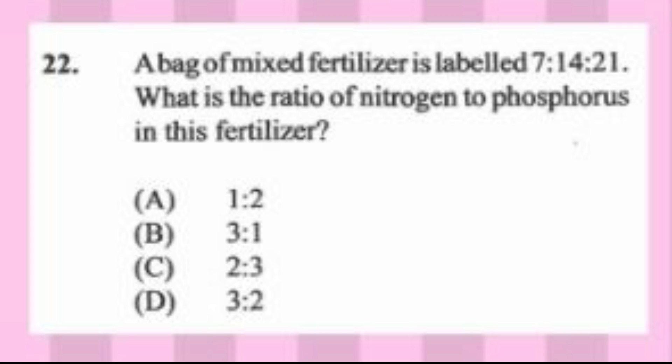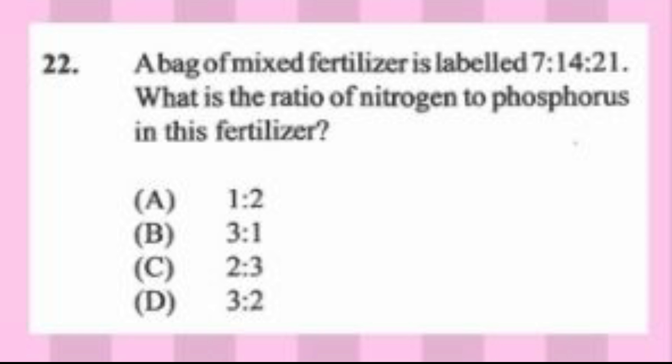Question number twenty-two: a bag of mixed fertilizer is labeled 7-14-21. What is the ratio of nitrogen to phosphorus? A) 1:2, B) 3:1, C) 2:3, D) 3:2. The answer is A, 1 to 2. You simplify the ratio using the lowest common factor of 7: 7÷7=1, 14÷7=2, 21÷7=3, giving a 1:2 ratio for nitrogen to phosphorus.